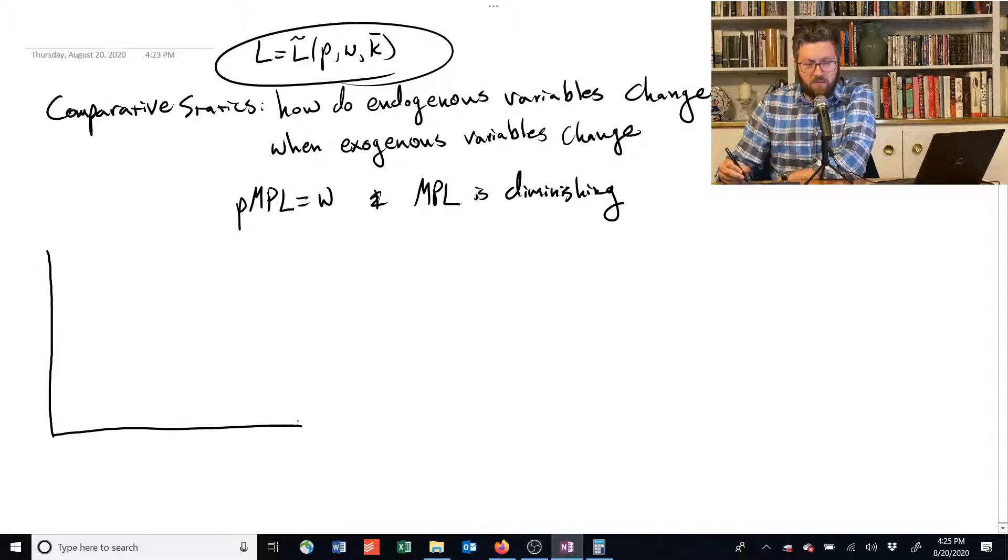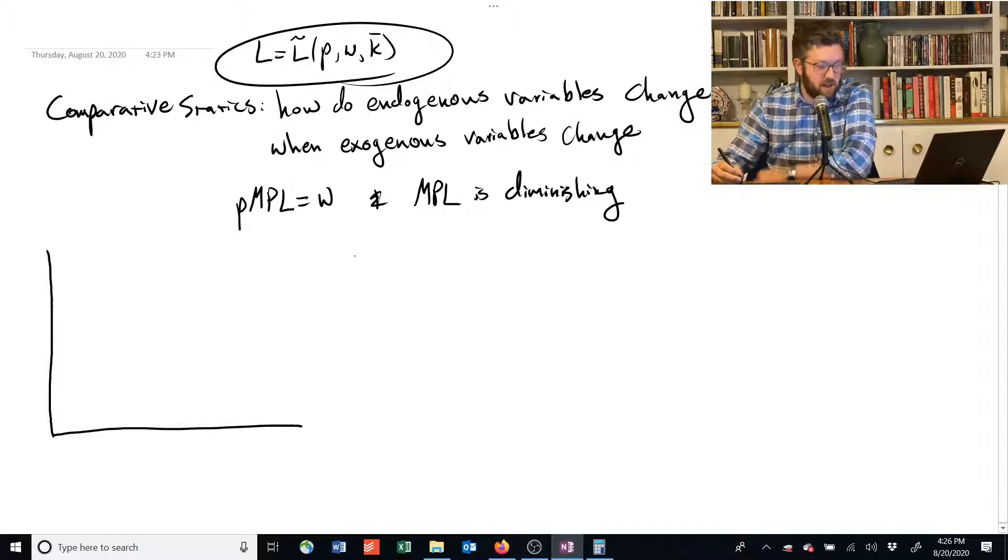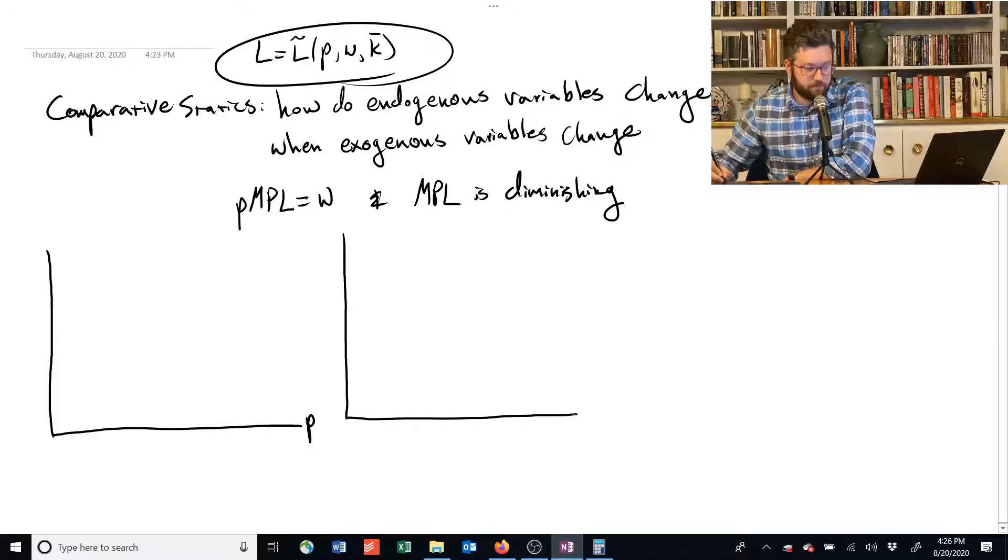So what we're going to graph here is how does, for example, the demand for labor, this L up here, how does it change when we change each of these exogenous variables? So we can change price, let me get a little more room, there we go. We can change the wage rate, and we can change the capital stock.